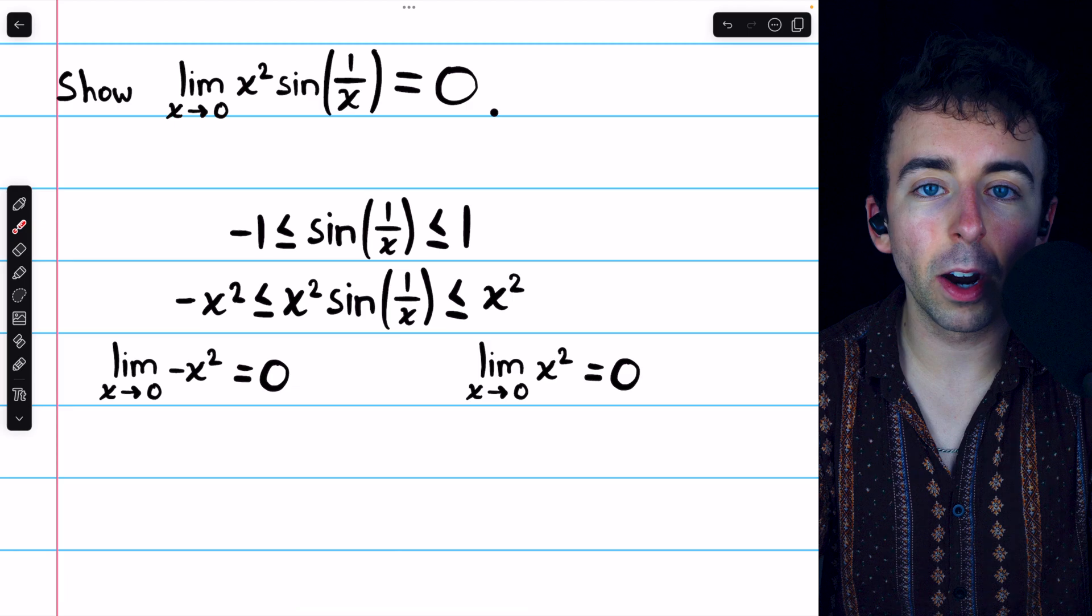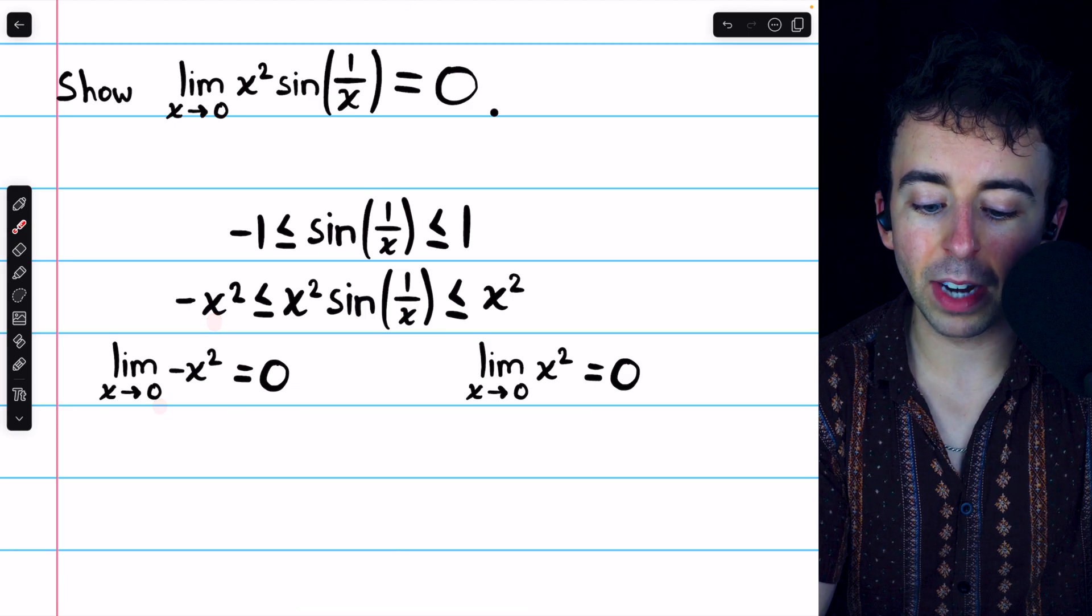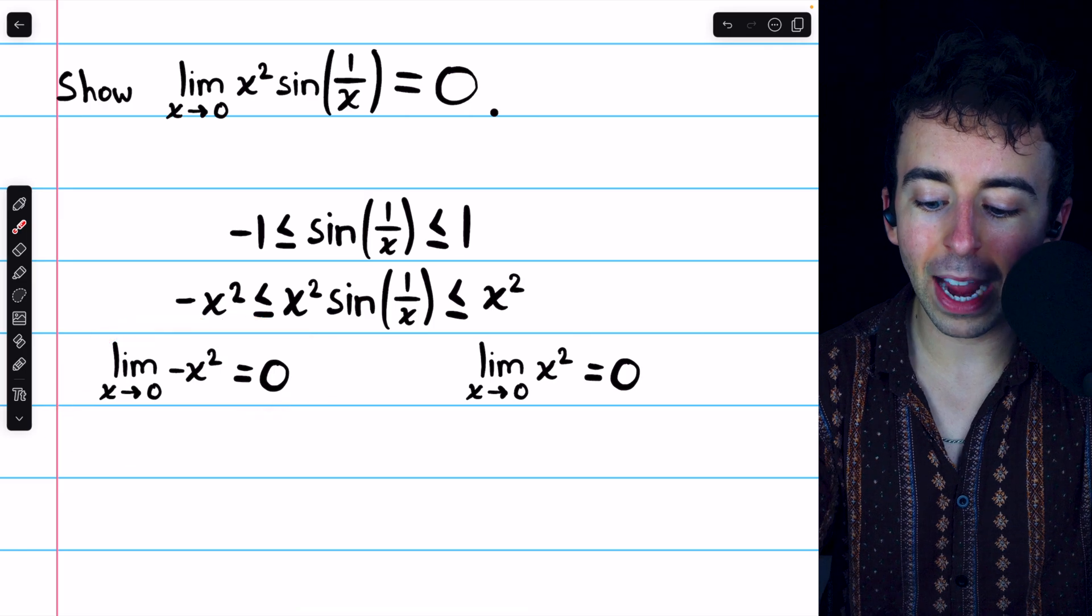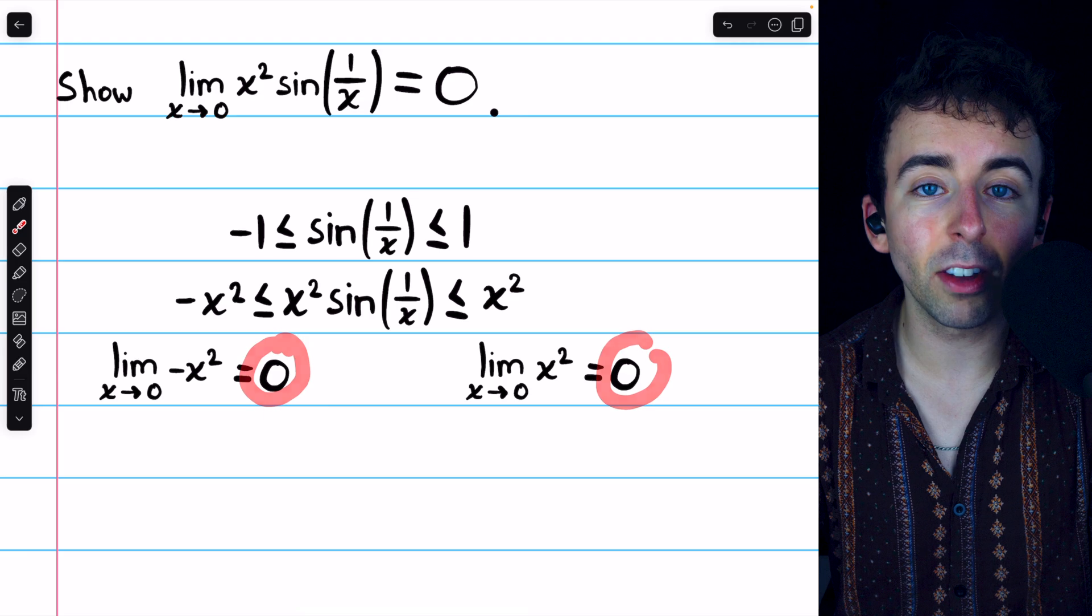In this case, as we approach 0, the limits are very straightforward, just plug in 0. The limit of negative x squared as x approaches 0, and the limit of positive x squared as x approaches 0, are both equal to 0.